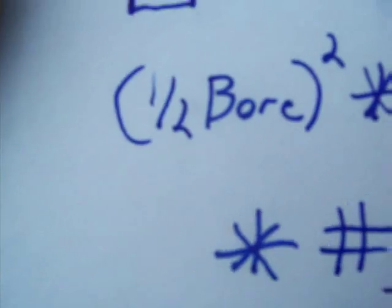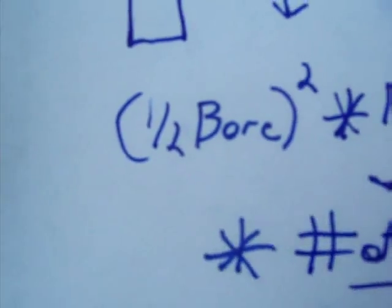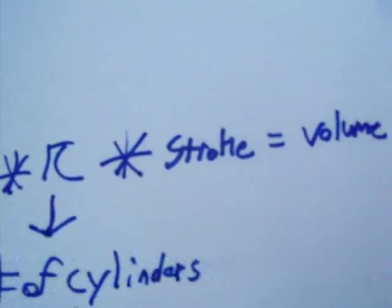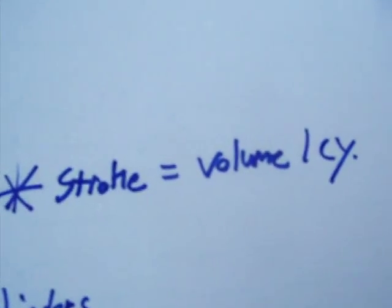The formula is you multiply your bore by one-half, and then you square that answer. You multiply it by pi, then you multiply it by your stroke, and you get the volume of one cylinder in your engine.